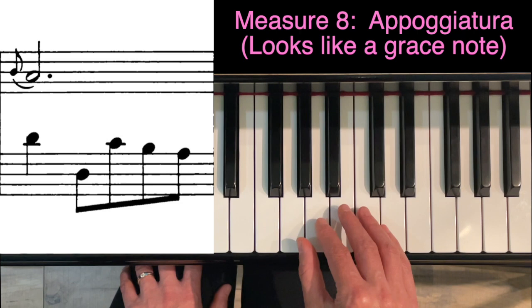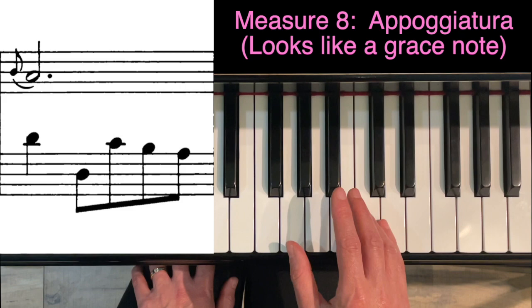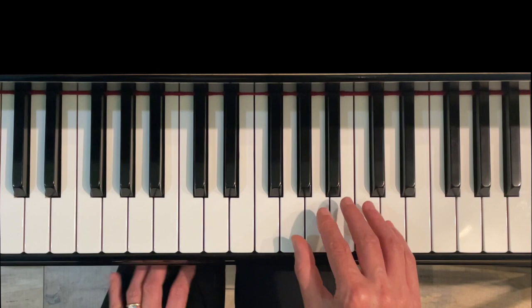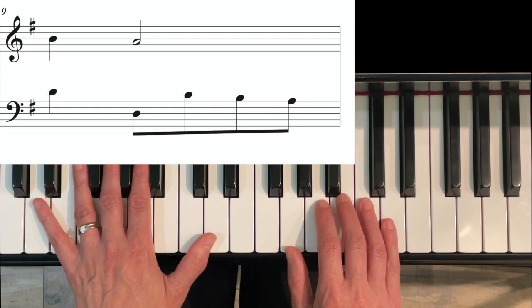Moving on, in measure eight we have what's called an appoggiatura. What this is looks like a grace note, and we've got to just divvy up the counting a little bit differently than it's written. It's not going to come before the beat. In this case, I'll show you two different ways this is commonly played. The most commonly accepted way of playing this appoggiatura is giving the B one beat and giving the A two beats, so that would add up to three beats.